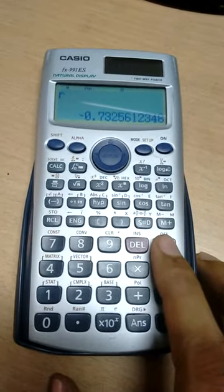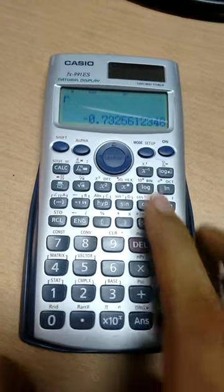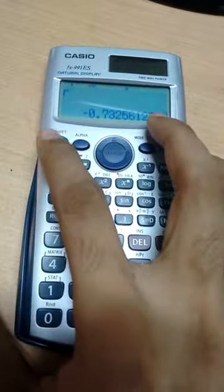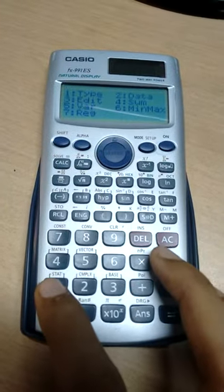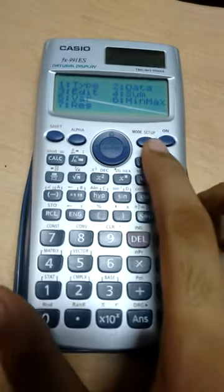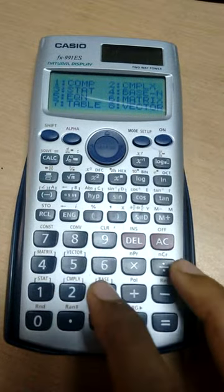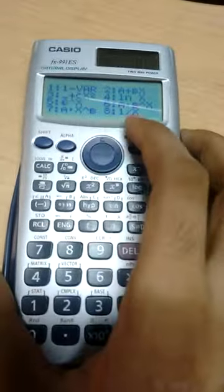Now, if you want a logarithmic trend or any other type of trend, you don't need to do anything else. You just have to do this: Shift, go to this Mode, then go to this Stat mode, and you have all types of equations.